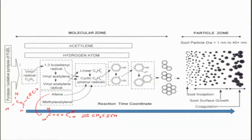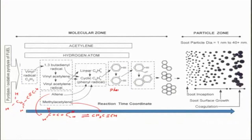Once methyl acetylene is formed, it will be cyclized. It will form a C₆H₆ structure. After that, this can go into vinyl acetylene C₆H₅ or into cyclic C₆H₅ — a phenyl group. Allene can also get into this pathway, or methyl acetylene can also convert into C₆H₅. Once it reaches this point, phenyl groups are formed. These phenyl groups will join together through polymerization to form a patch — the patch is polyaromatic hydrocarbons (PAH).